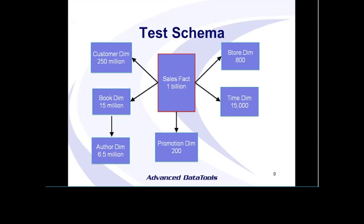As Lester said, we have set up an example database — it's a data mart and everything centers around a fact table. We're trying to simulate a bookstore or a chain of bookstores. There are 800 stores in this fictional data mart. We have loaded a billion records into our fact table, as you can see here. So it's pretty sizable. We have a customer dimension table with 250 million customers, and each sale is linked to a customer.